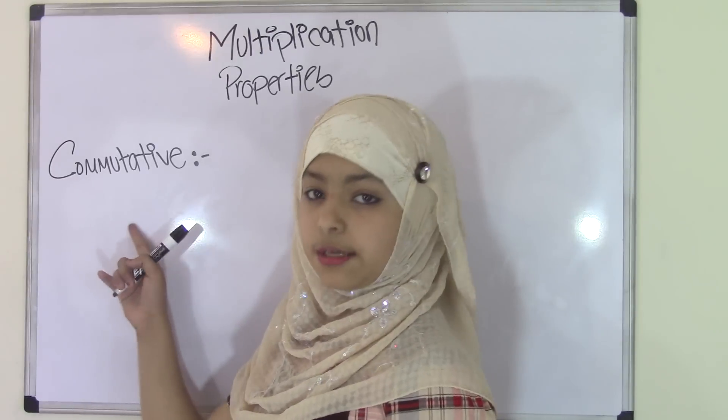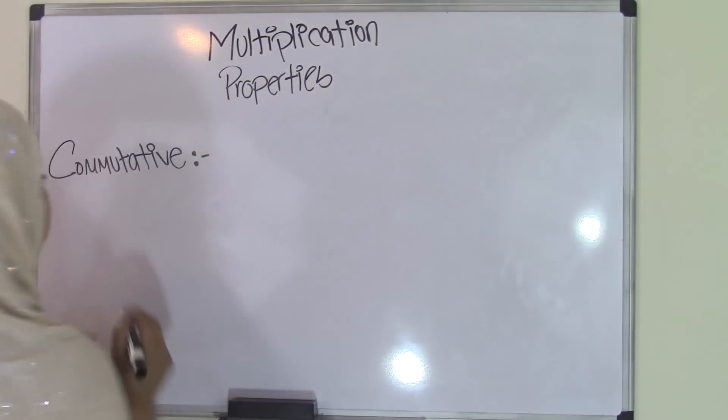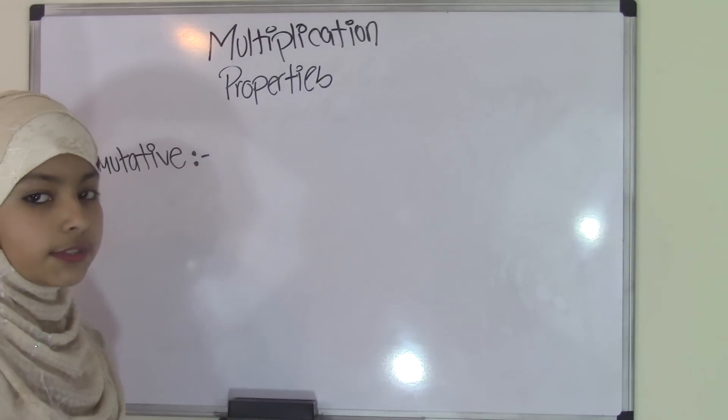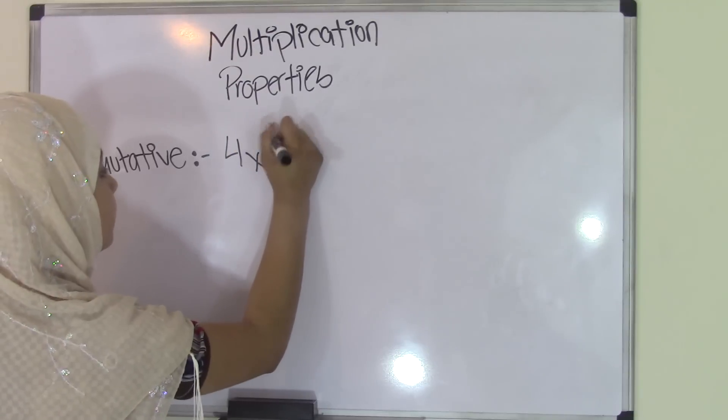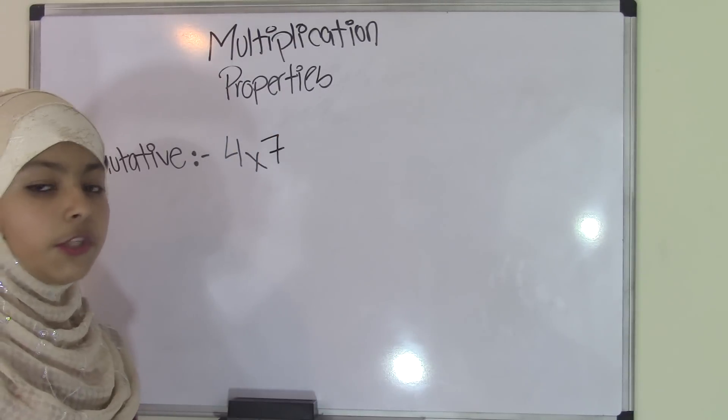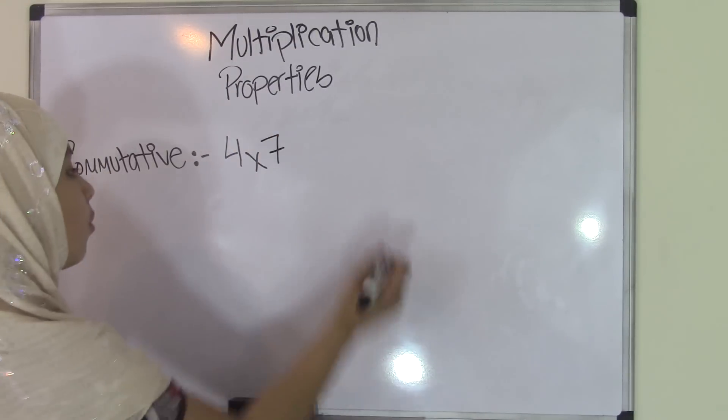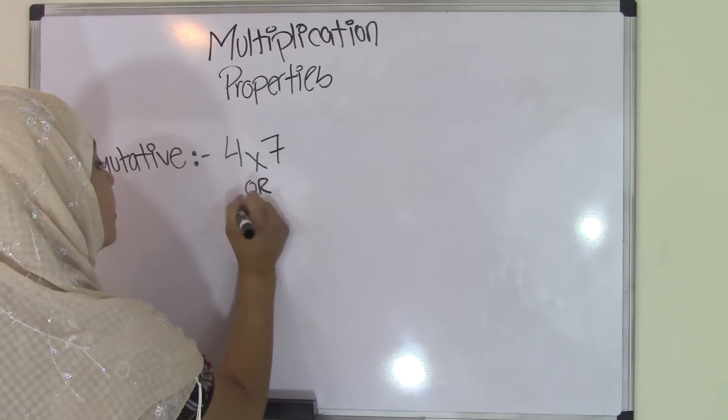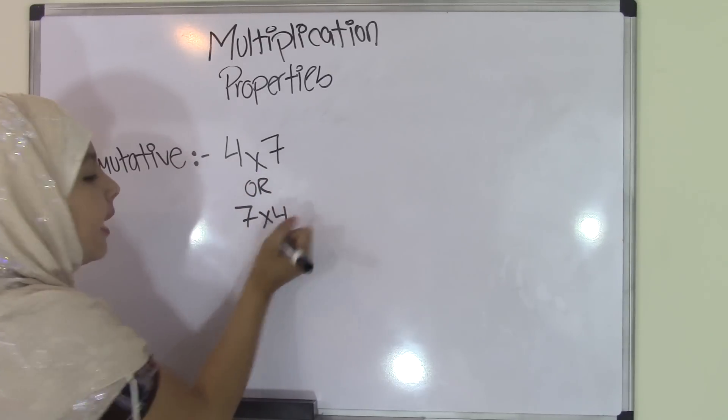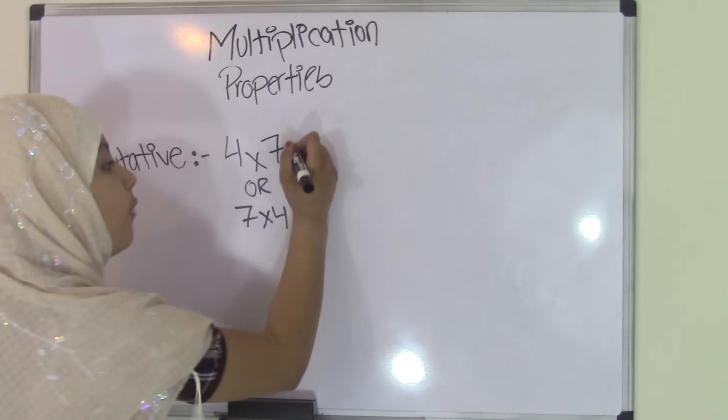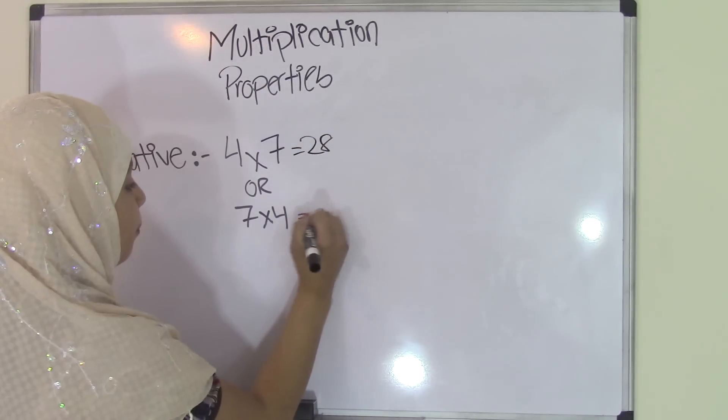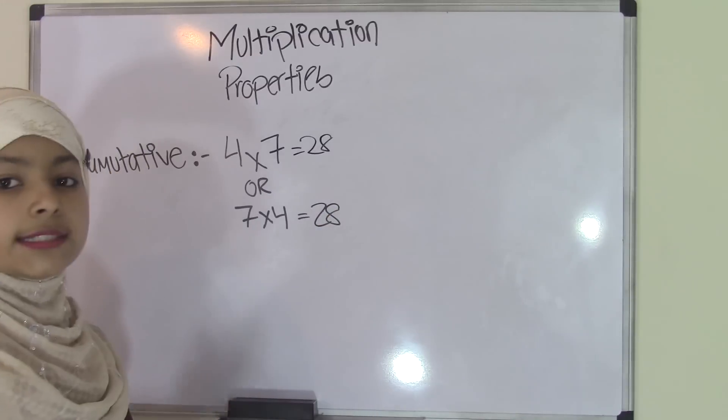The first property is commutative property. The commutative property is basically reverse operations. So if you have 4 times 7, in the commutative property you can write this as 4 times 7 or 7 times 4. Either way, it does not matter because you'll still get the same product of 28. So that is the commutative property.